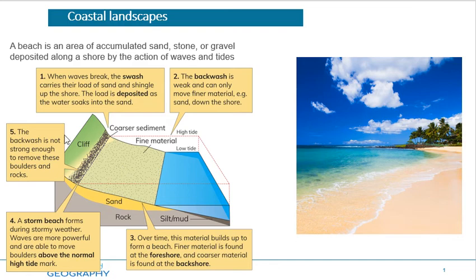Our definition for a beach: a beach is an area of accumulated sand, stone, or gravel deposited along the shore by the action of waves and tides. Very straightforward — an accumulation of sand, gravel, or stone on your coastline. How did it get here? It was transported by waves.